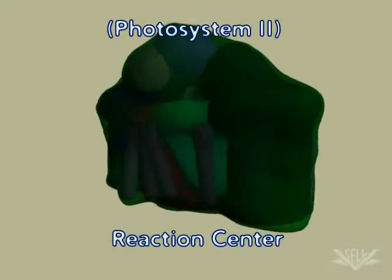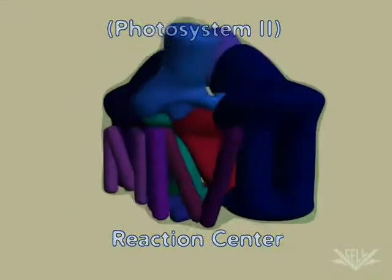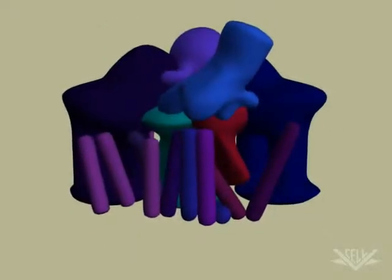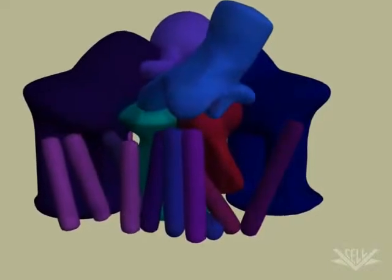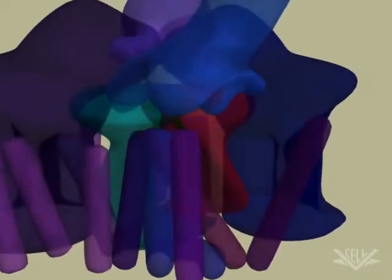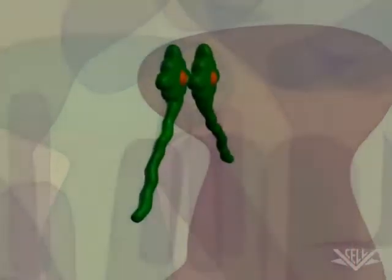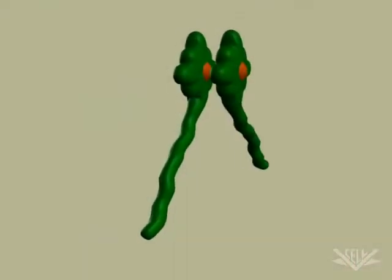The reaction center of Photosystem II consists of multiple proteins and pigment molecules. At the heart of the reaction center is a special pair of chlorophyll molecules, P680, which donate an electron to the electron transport system.